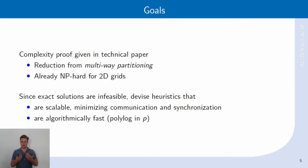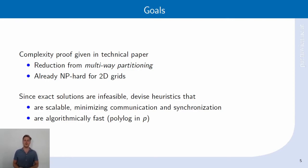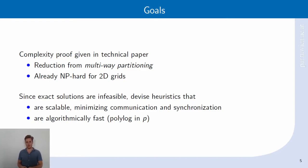The question sounds easy, but it turns out it is actually not. This problem is NP-hard — it is not optimally solvable in a reasonable amount of time. We have proven this using the reduction of the multi-way partitioning problem, which is a strongly NP-hard problem, to our grid partitioning problem. And it is already NP-hard for 2D grids.